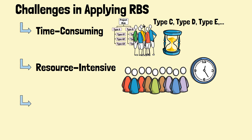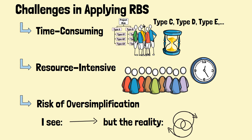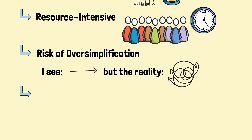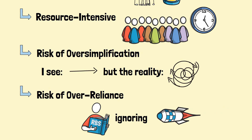Challenge number three: risk of oversimplification. The RBS may oversimplify complex risks, making it challenging to fully understand the potential impact of these risks on the project. Challenge number four: risk of over-reliance. Project managers may become overly reliant on the RBS and ignore other important sources of risk not captured in the structure.